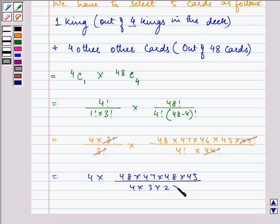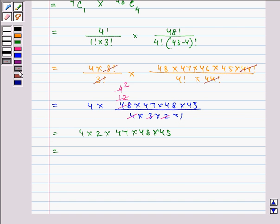This can be further simplified. We are left with 4 times 2 times 47 times 46 times 45, which equals 778,320.